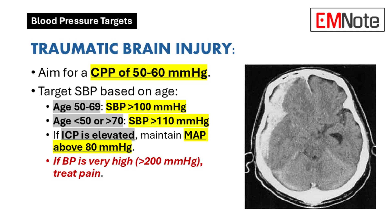Age-specific systolic blood pressure targets are established as follows. For patients aged 50 to 69 years, systolic pressure should be maintained above 100 mmHg. For patients below 50 or above 70 years, systolic pressure should be maintained above 110 mmHg. When intracranial pressure is elevated, mean arterial pressure must be maintained above 80 mmHg.